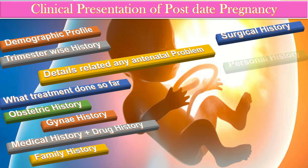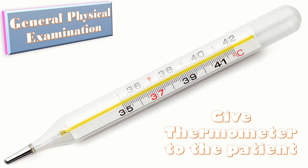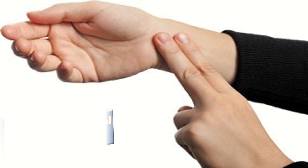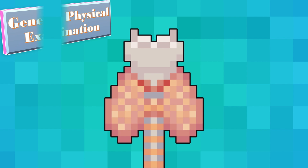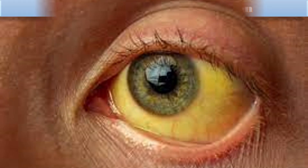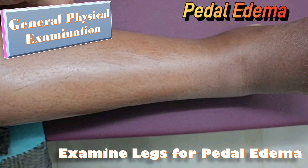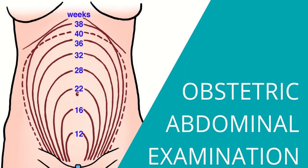We also ask routine questions related to gynecological history, medical history, drug history, family history, surgical history, personal history, and socioeconomic history. For general physical examination, give a thermometer to the patient, examine the hands for pallor and sinuses, check the pulse and blood pressure, examine the thyroid for swelling, check conjunctiva for pallor, sclera for jaundice, record temperature, examine legs for pedal edema, then do routine obstetric examination: check fetal heart sounds, exclude IUGR, assess liquor volume, estimate fetal weight, check abdominal wall edema, right upper quadrant tenderness, and fundal height.